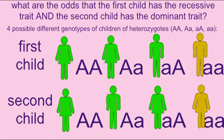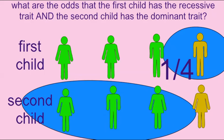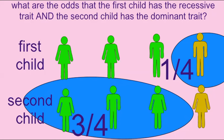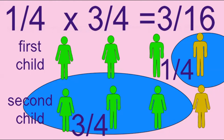The odds that the first child will possess the recessive trait is one in four, and the odds that the second child will possess the dominant trait is three in four. If a family has two children, the odds of the combination where the first child possesses the recessive trait and the second child possesses the dominant trait is equal to one-fourth times three-fourths, which is three-sixteenths.